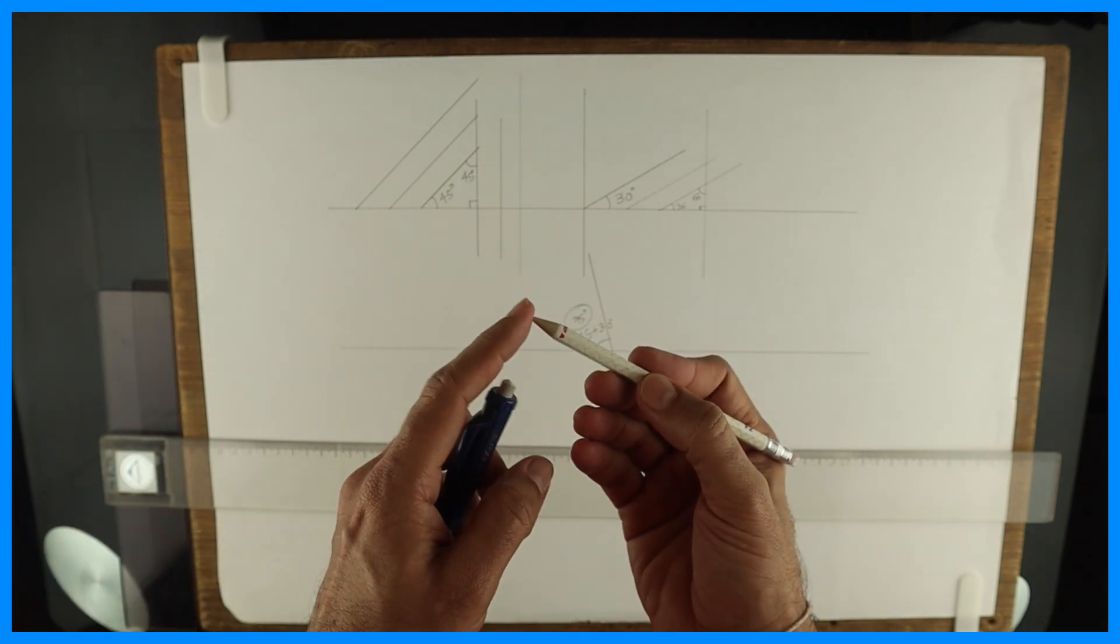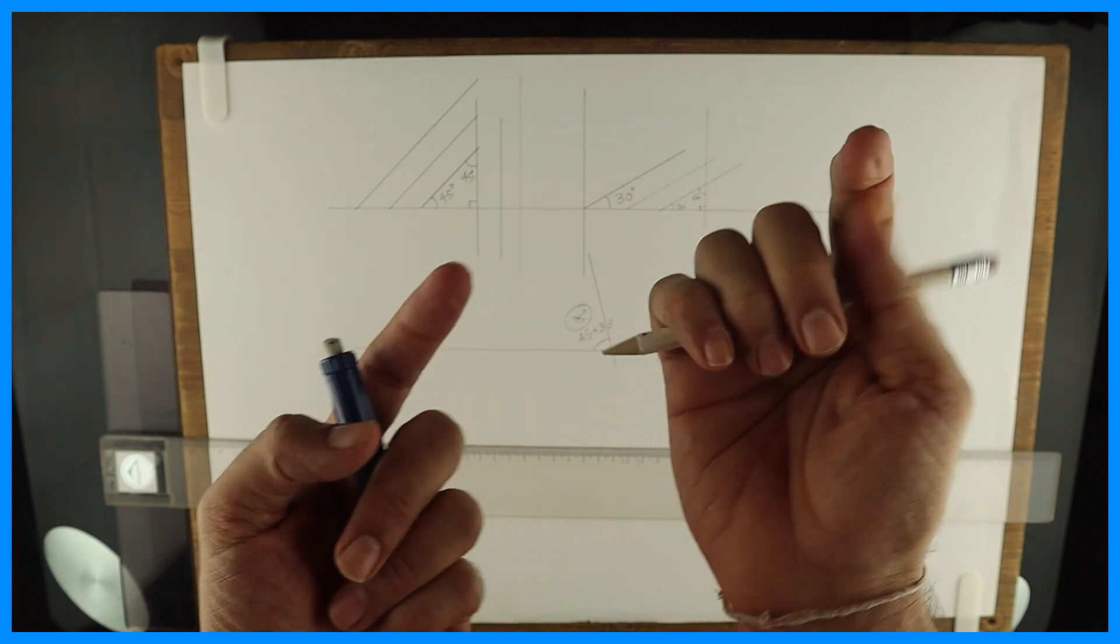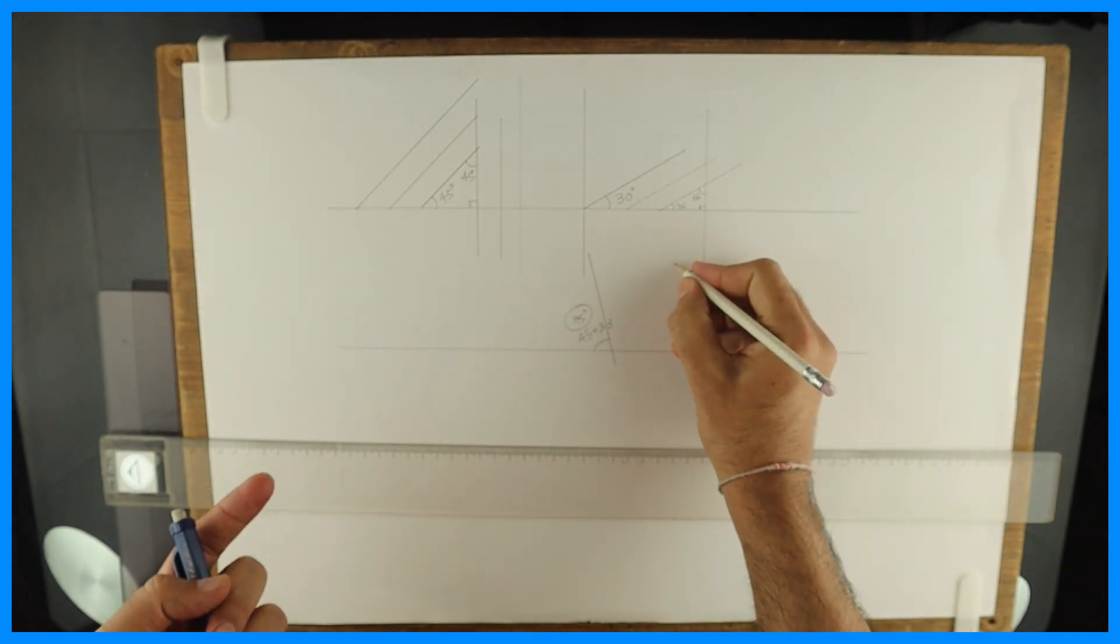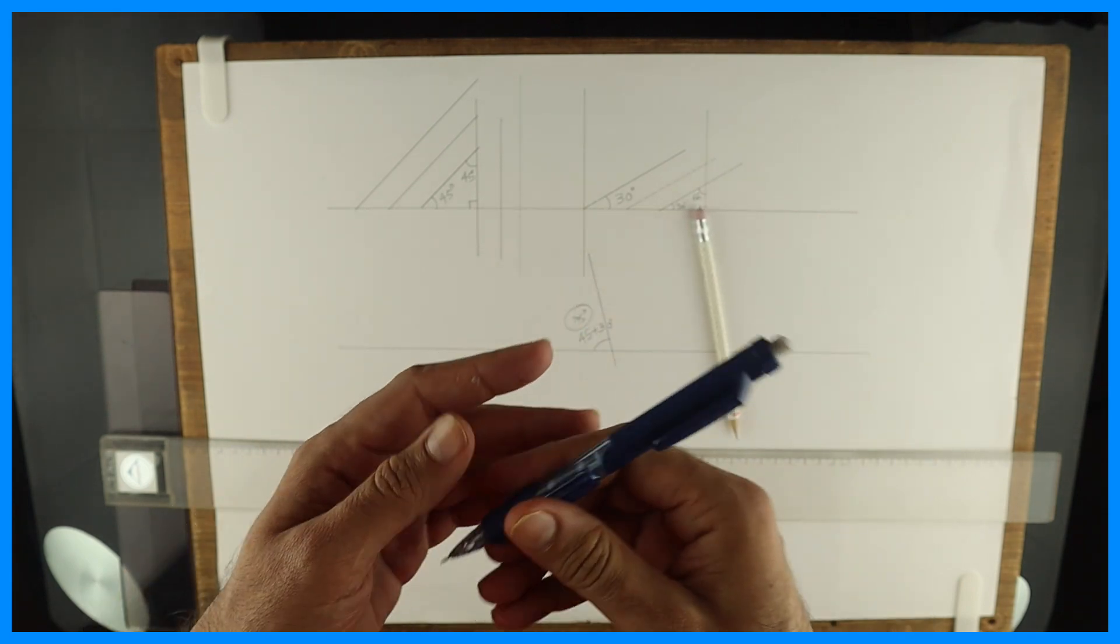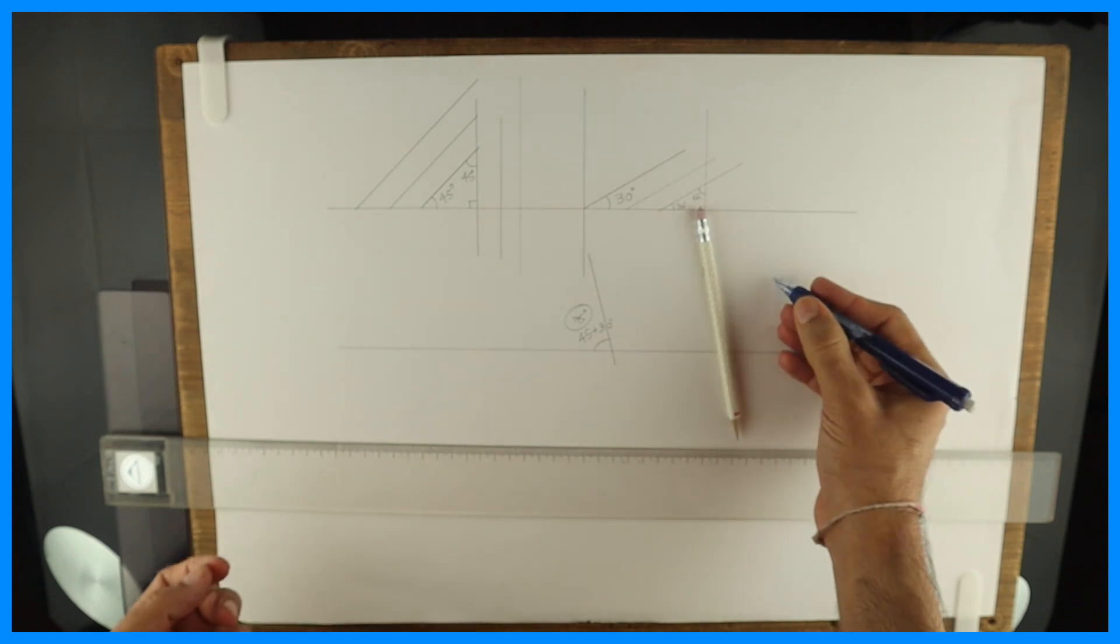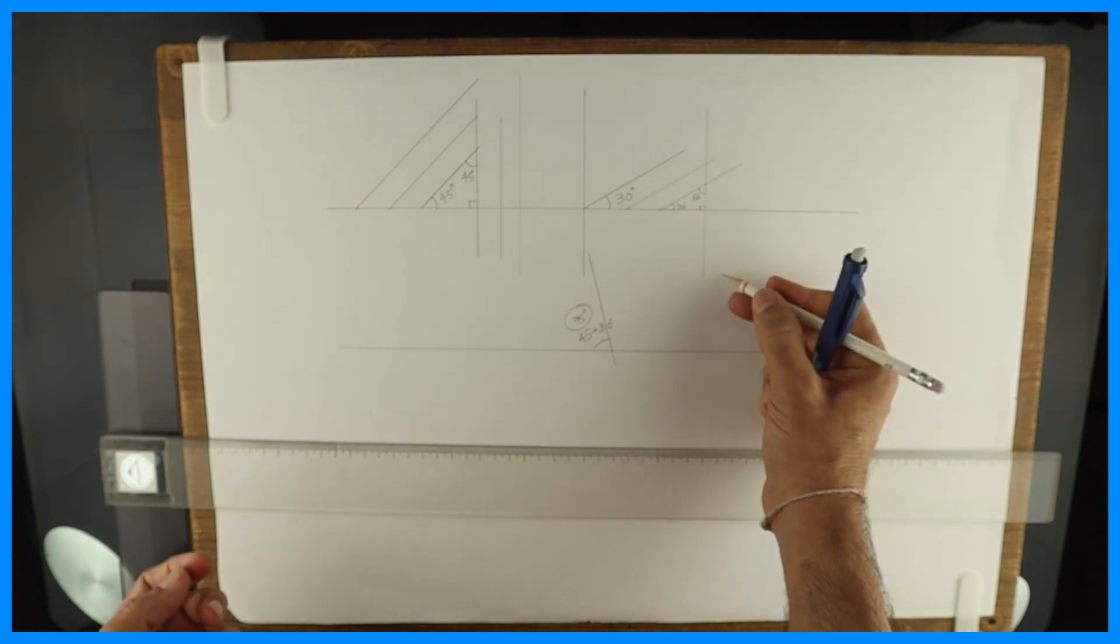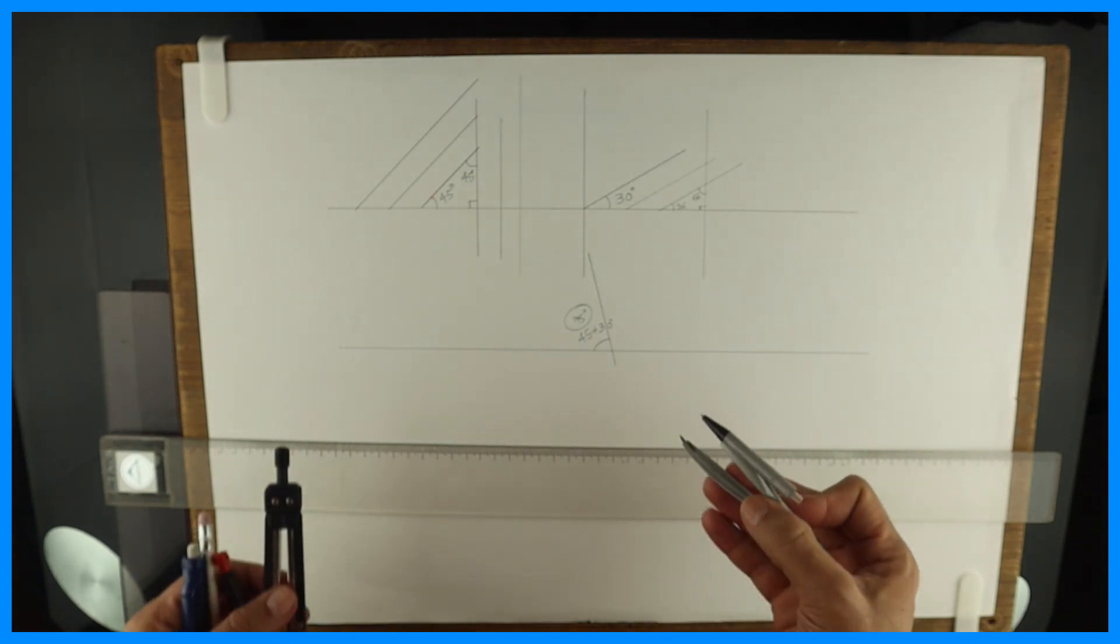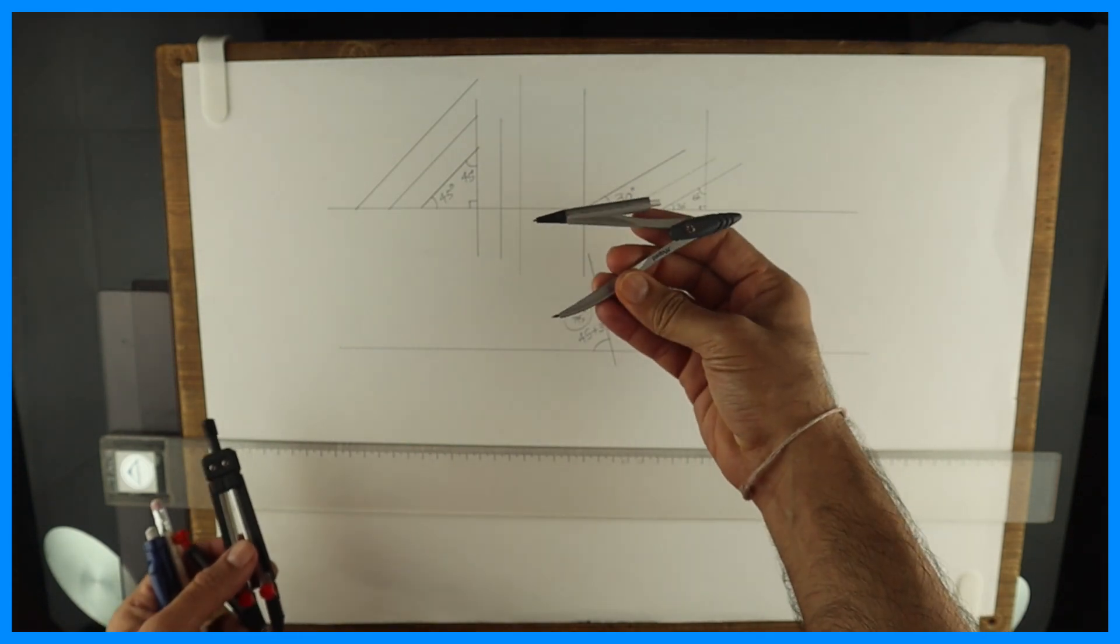This is one more 0.5 pen pencil, but there is no steel nib in this. See this - directly lead will come out. So generally I don't prefer this. I prefer this because it has a steel nib. So even if I am applying more pressure, my lead won't break. That's why we use steel nib.